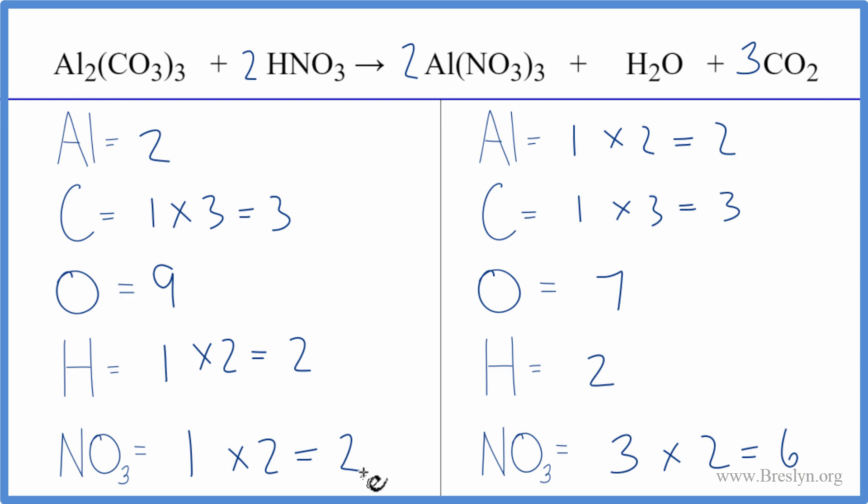But I can get the nitrates balanced. So I could, instead of having two in front of this HNO3, I could put a six there. So then let's fix the nitrates here. Now I have one nitrate times six. So I have six nitrates. Those are balanced.